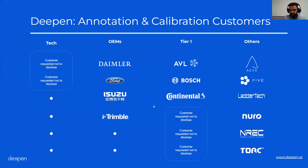Just to give you an idea about Deepin: we've been around for five years, working on annotation and calibration for many customers in the space. Some of the names we can mention are Daimler, Bosch, Honda, Toyota, Nissan, AVL, Conti, Suzu, Trimble, and many others. We've been doing a lot of sensor fusion data annotation over the years, and have a relationship with pretty much all of the LiDAR and radar providers.